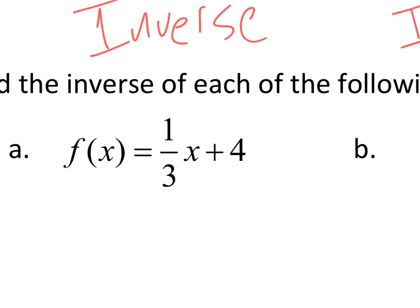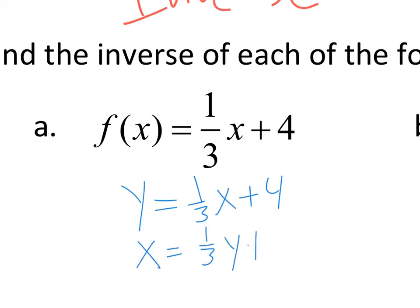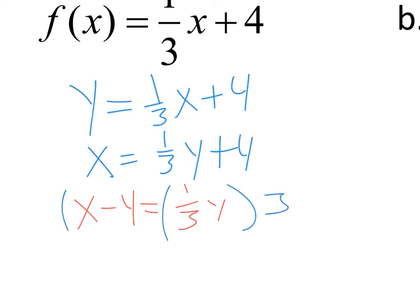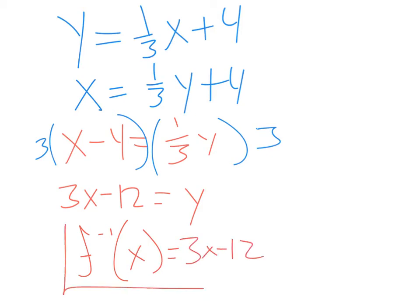Now we're going to find some inverses. To find an inverse, we write it in terms of y — just rewrite it as y instead of f of x. Then we switch the x and y around: x equals one-third y plus 4. Solving for y, we subtract 4 to get x minus 4 equals one-third y, then multiply by 3. That leaves us with 3x minus 12 equals y. So the inverse of f is 3x minus 12.